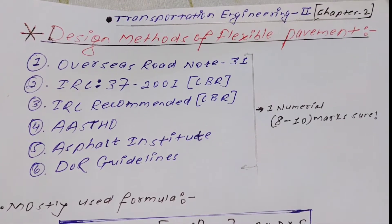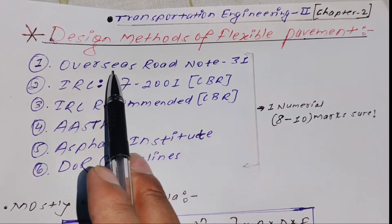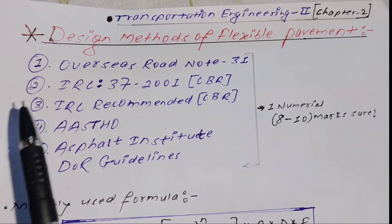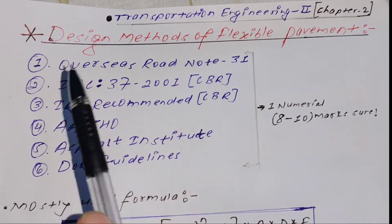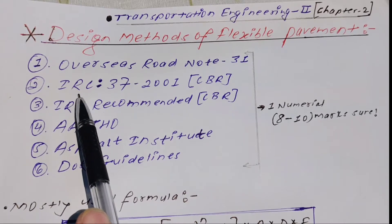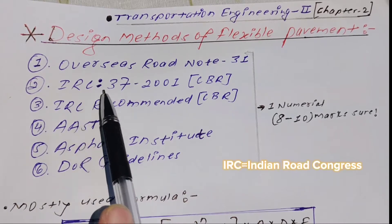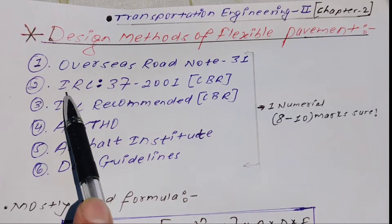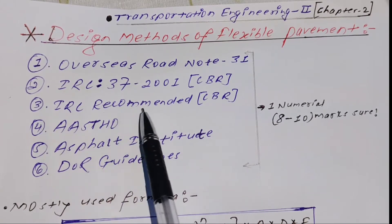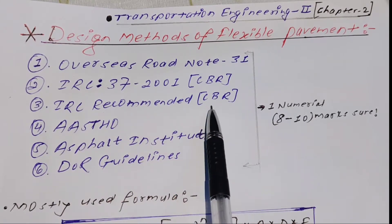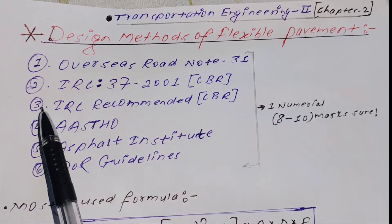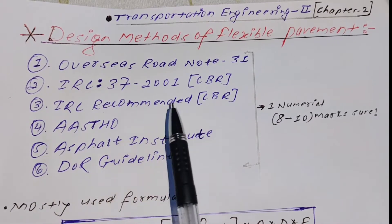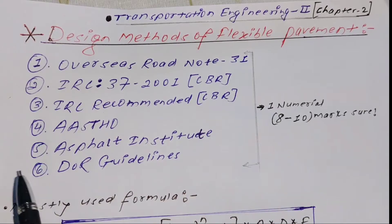For flexible pavement design, the first method is the Overseas Road Note method. The second is the IRC (Indian Road Congress) 37:2001 CBR method — the IRC recommended CBR method for designing flexible pavement.